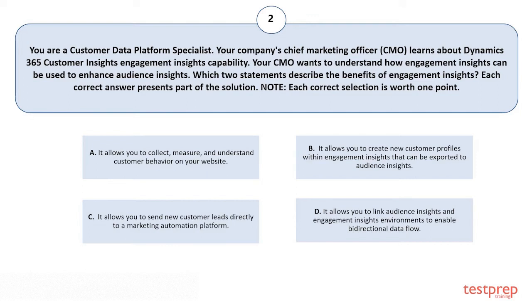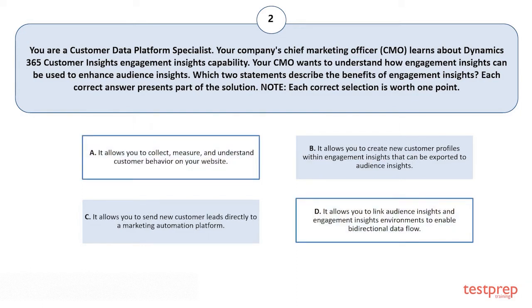Option B: It allows you to create new customer profiles within Engagement Insights that can be exported to Audience Insights. Option C: It allows you to send new customer leads directly to a marketing automation platform. Option D: It allows you to link Audience Insights and Engagement Insights environments to enable bi-directional data flow. The correct answers are Option A and D.